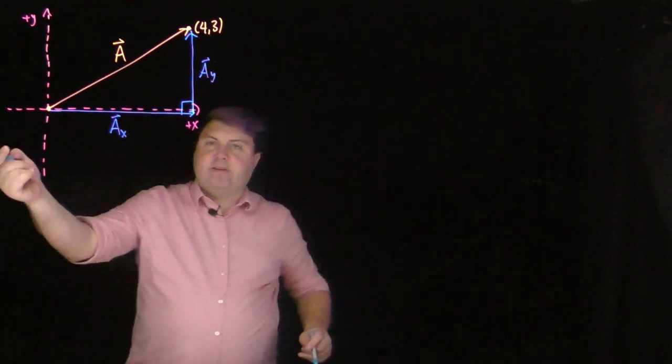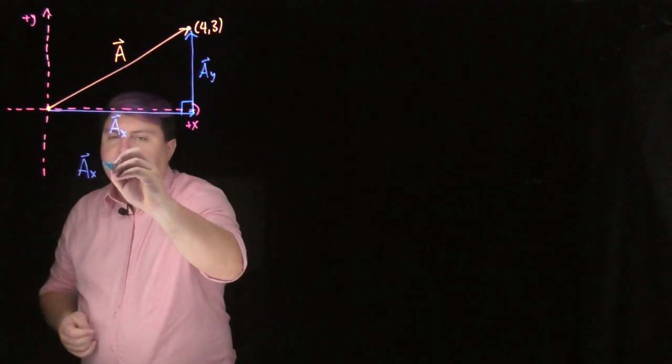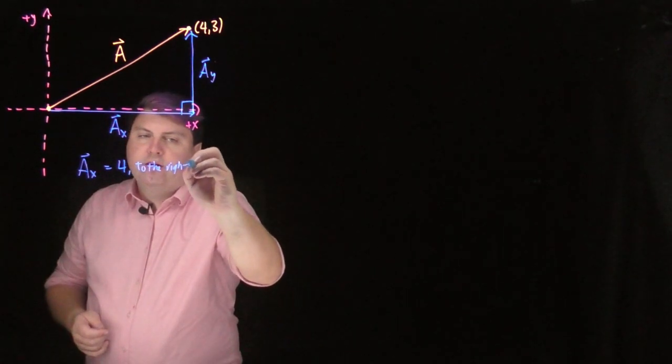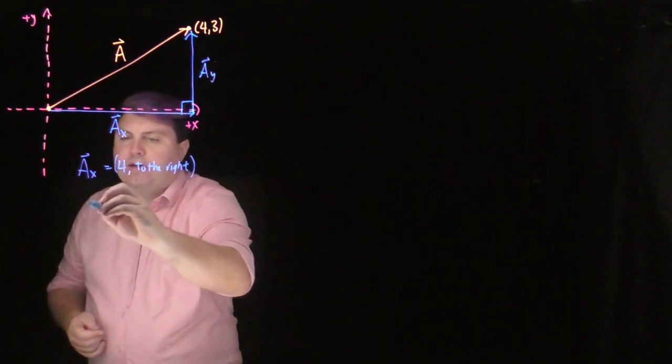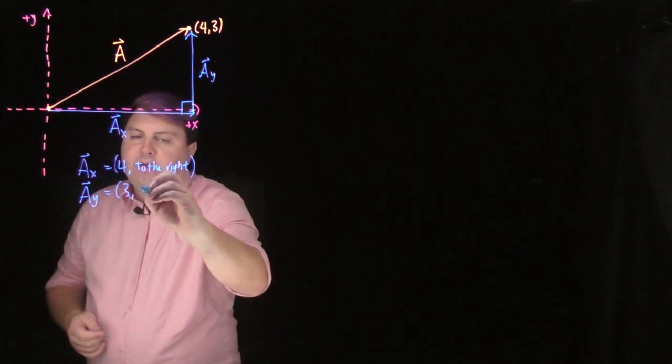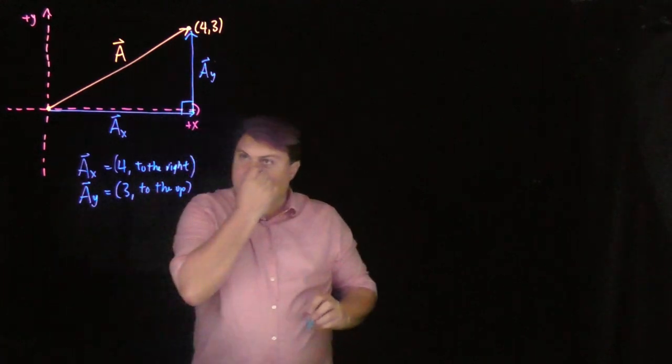What's nice about ax vector is that it's entirely in one direction. I can say that ax vector is 4 in the to the right direction. For my ay vector, I can say it is 3 into the up direction.